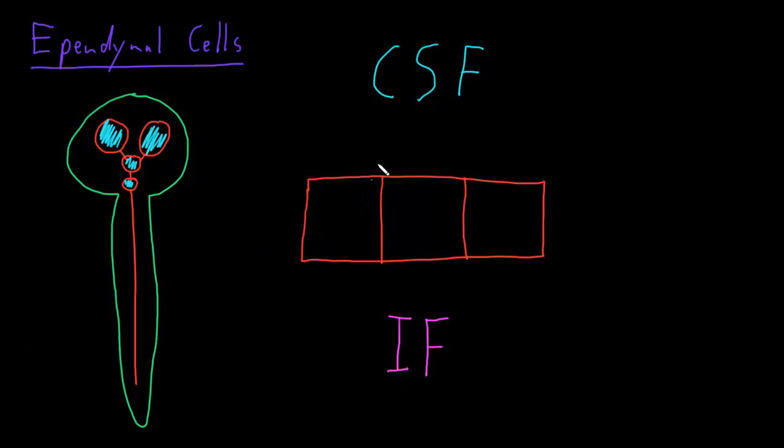On the side of the ependymal cells facing the cerebrospinal fluid are a large number of little tiny processes called microvilli that increase the surface area of the ependymal cells on that side. They also have some processes that are a little longer called cilia, that are these mobile whip-like structures that kind of whip around and help move the cerebrospinal fluid around.